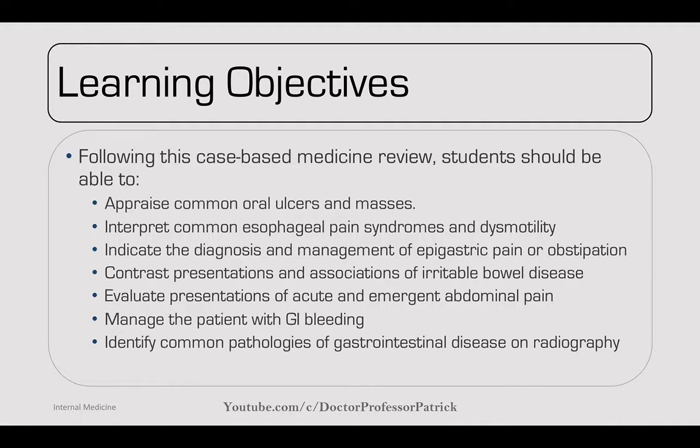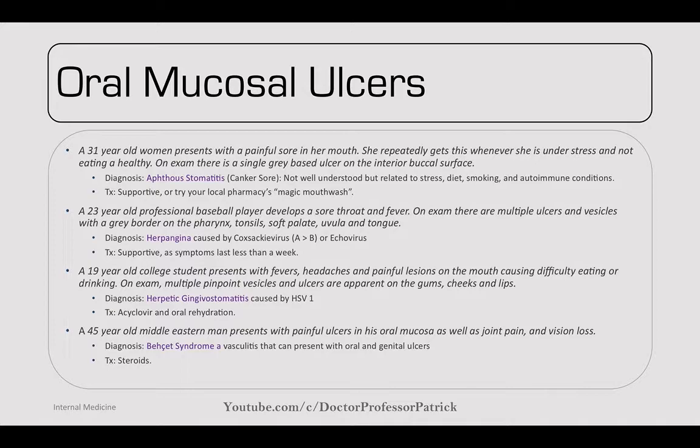We're going to work through top to bottom and then look at some films. Starting with oral mucosal ulcers — if you have a 31-year-old woman who presents with painful sores in her mouth, she repeatedly gets these whenever she's under stress and not eating healthy. On exam, there's a single gray-based ulcer on the anterior buccal surface. The diagnosis is aphthous stomatitis or canker sore. It's not well understood, but can be related to stress, diet, smoking, and certain autoimmune conditions.